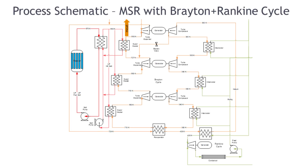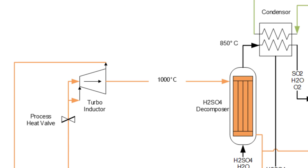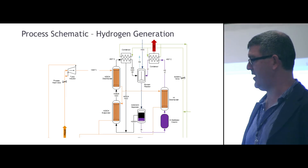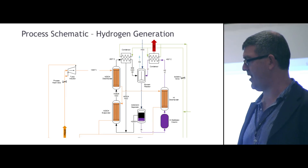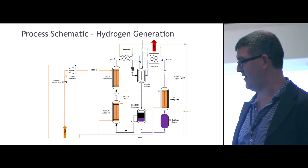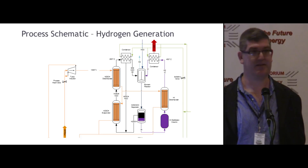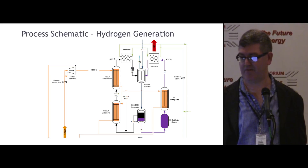In this chart, the heat feeds to the top and into the sulfur-iodine plant. The turbo inductor is able to actively divert heat from the high-temperature loop that would normally be generating electricity, redirecting it into the hydrogen generation plant. You can see the heat coming in from the bottom, going through the turbo inductor and then through the sulfur-iodine plant. Distilled water comes in from the top, hydrogen and oxygen leave as outputs.